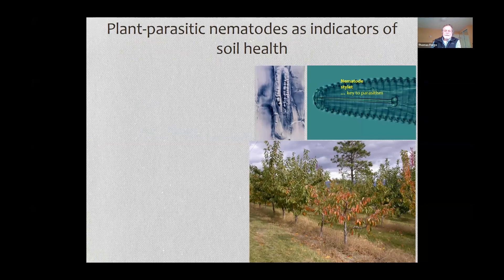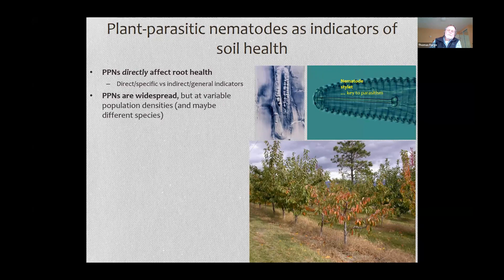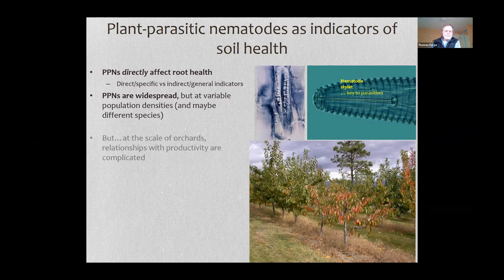One of the main reasons plant parasitic nematodes are good indicators is that they directly affect root health. They have stylets that they use for puncturing root cells and gaining entry into roots for the endoparasites. They're also widespread, and for something to be useful as an indicator, it needs to be fairly widespread and present in most places, but at variable population densities. That variation in population densities is related to the broader question of soil health.